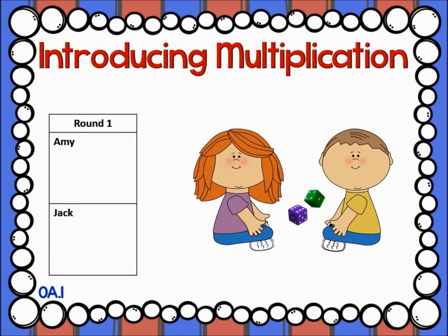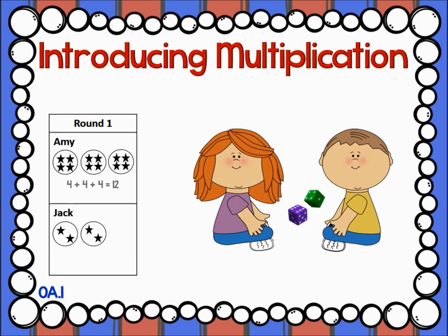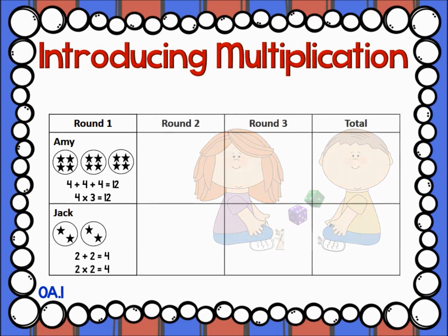Another beginning activity is the Marilyn Burns game, Circle and Stars. Partners each get a recording sheet and 2 dice. Partner 1 — in this case Amy — rolls a die and draws that many circles to represent that many groups. Here, she rolled a 3, so she draws 3 circles for her 3 groups. Jack rolls a 2 and draws 2 circles for his 2 groups. Now Amy rolls again to determine how many objects go into each group. She rolled 4, so she puts 4 stars in each group. Jack rolls a 2 and draws 2 stars in each group. Both students work to see how many total stars they have in their groups. Since multiplication is new at this point, the teacher should encourage students to record both a repeated addition equation and a multiplication equation. After 3 rounds, the student with the most stars wins.